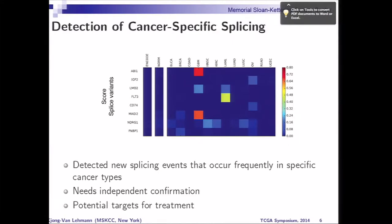This gets us to our first goal. We basically have gone and analyzed the RNA-seq splicing events. We detected new splicing events that occur frequently in specific cancer types. We still need some more independent validation, but they are very interesting cases which may be suited as potential targets for treatment.